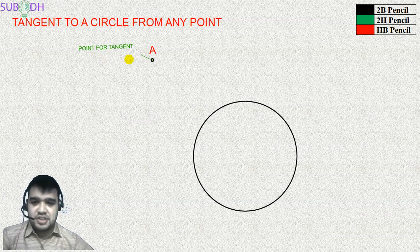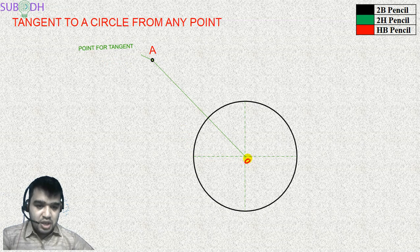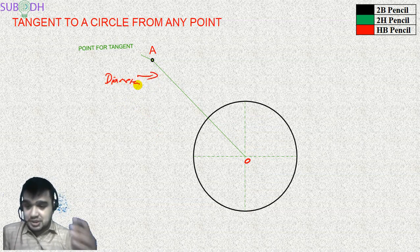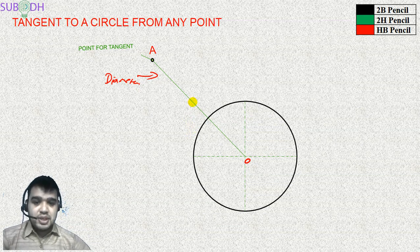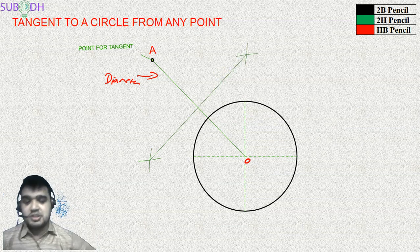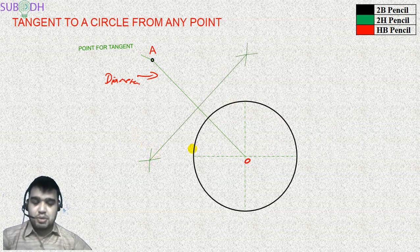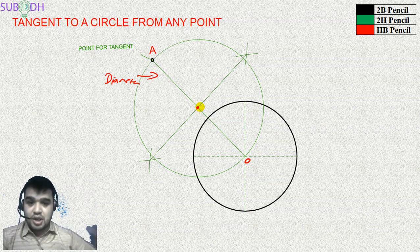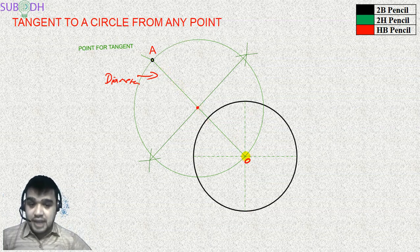The point of tangency is A and the center is O. Step one: join O to A. Step two: find the perpendicular bisector of OA — this bisector gives us the midpoint, which becomes the center of our new circle. Step three: with that midpoint as center and OA as diameter, draw a circle. The intersection of this new circle with the original circle gives the tangent points.